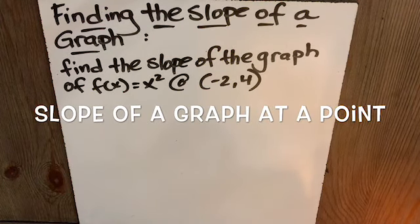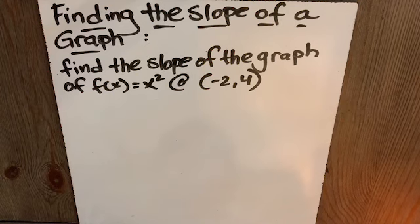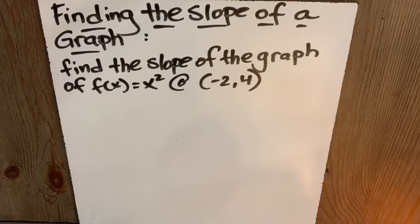Finding the slope of a graph. Now we're not just going to be eyeballing and approximating. It says, find the slope of the graph of f of x equals x squared at negative 2, 4.